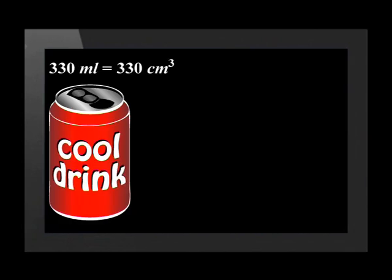For example, a can has 330 millilitres of liquid in it. One millilitre is equivalent to one cubic centimetre. Therefore, three hundred and thirty millilitres is the same as three hundred and thirty cubic centimetres.